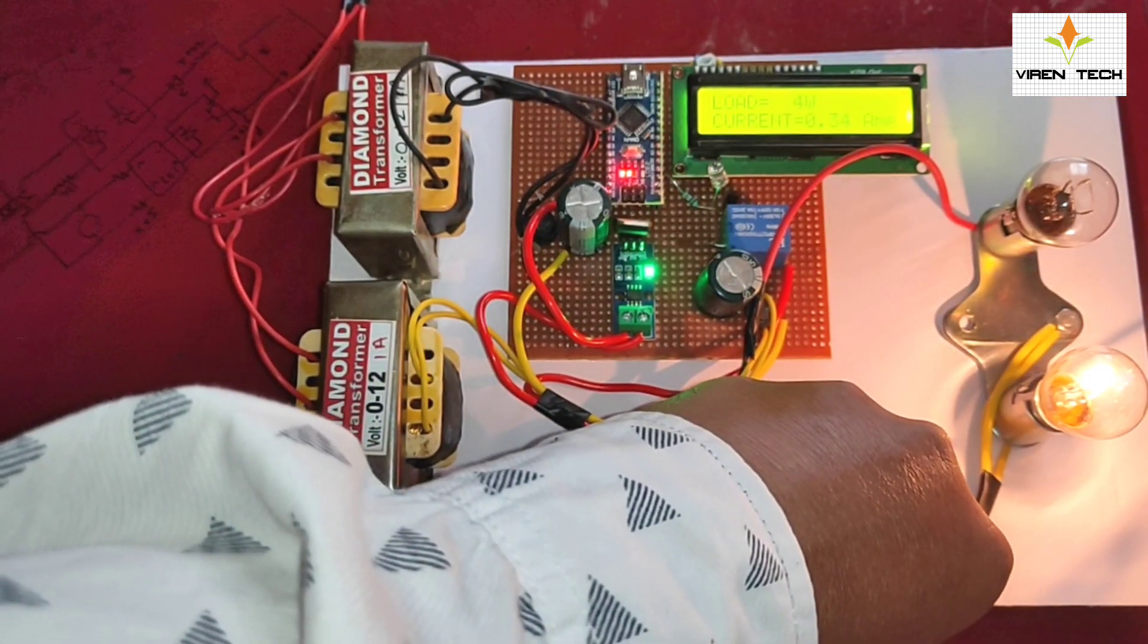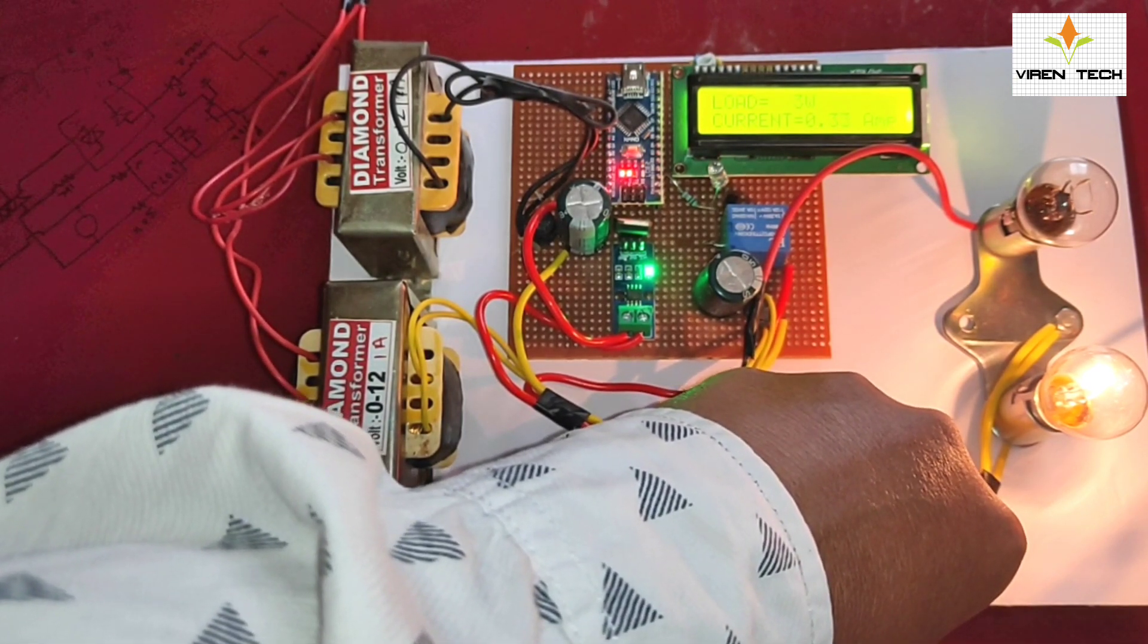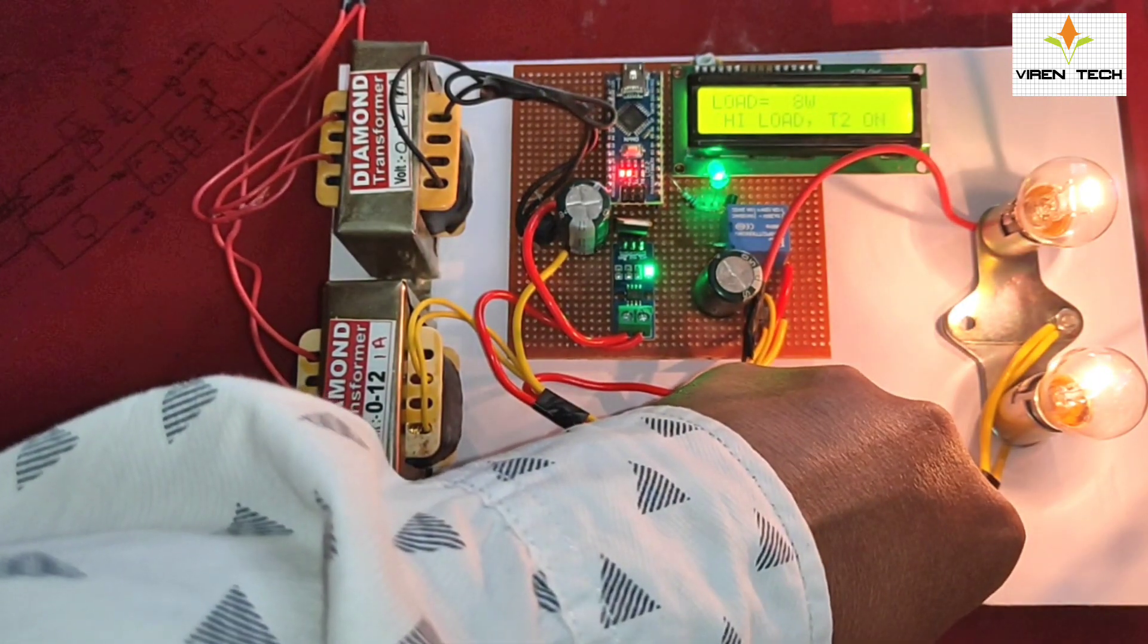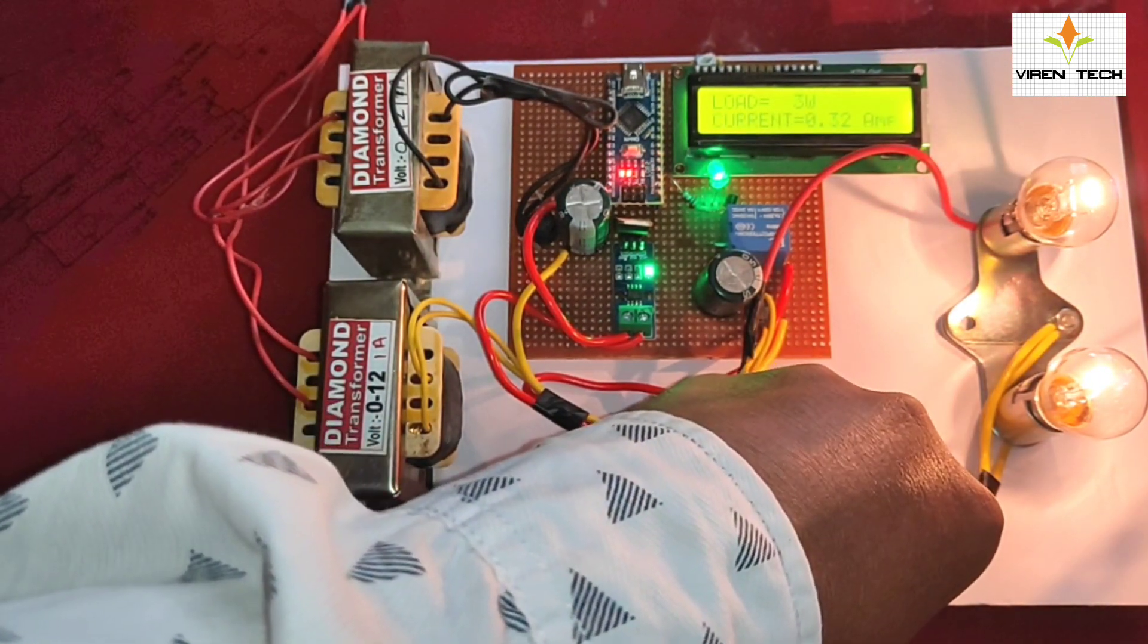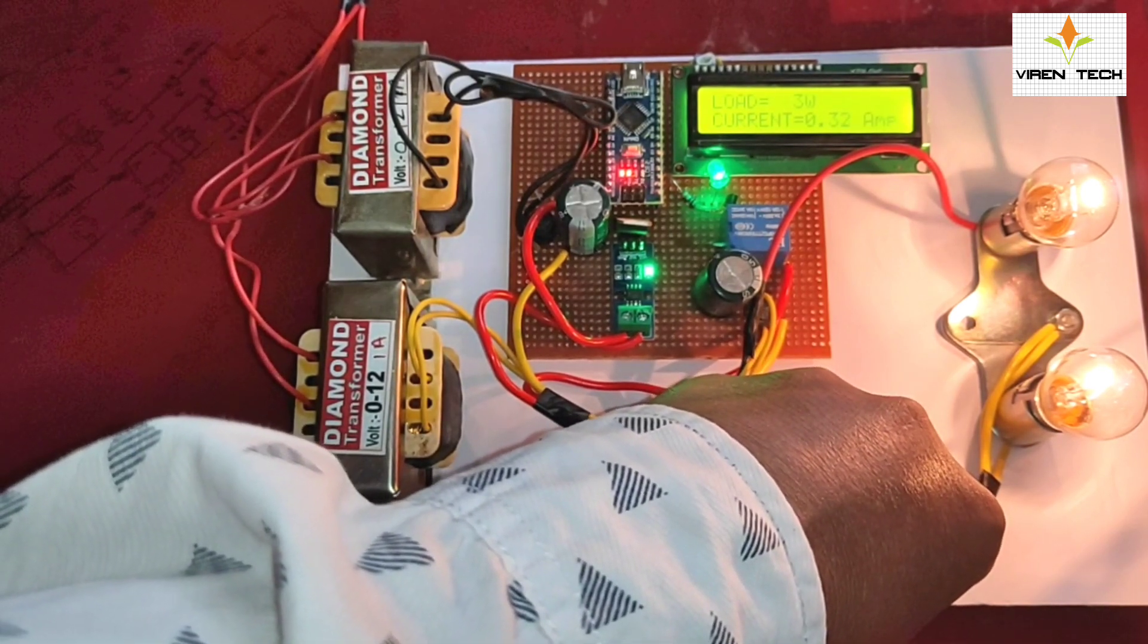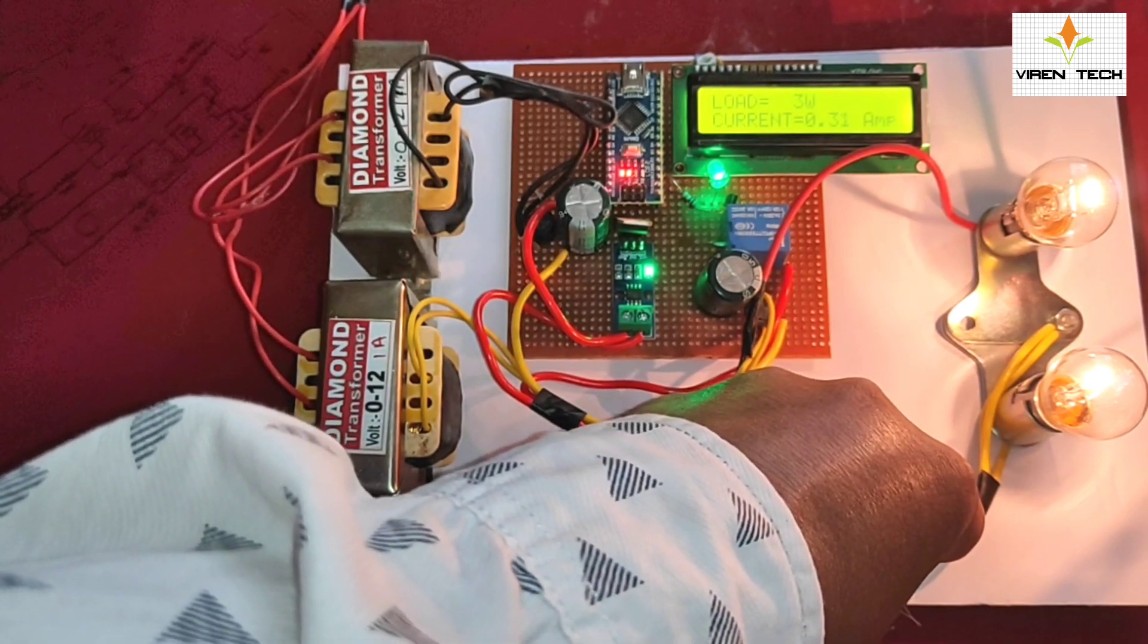See, relay turns off so second transformer is turned off. When I turn on the switch the load will be on the first transformer. And now as soon as the relay turns on the second transformer gets added into the line and the intensity is increased.